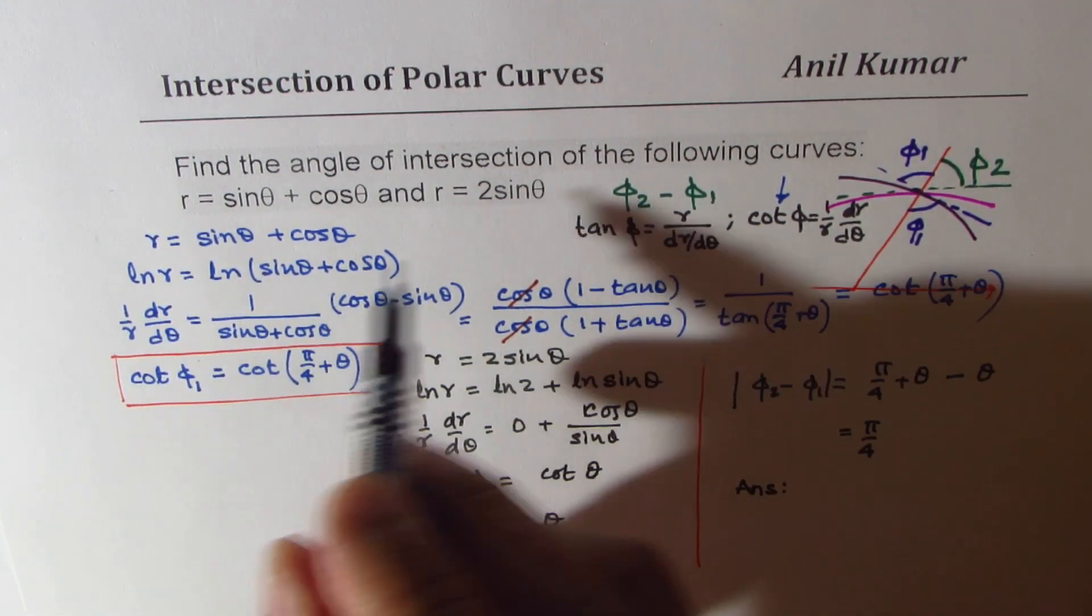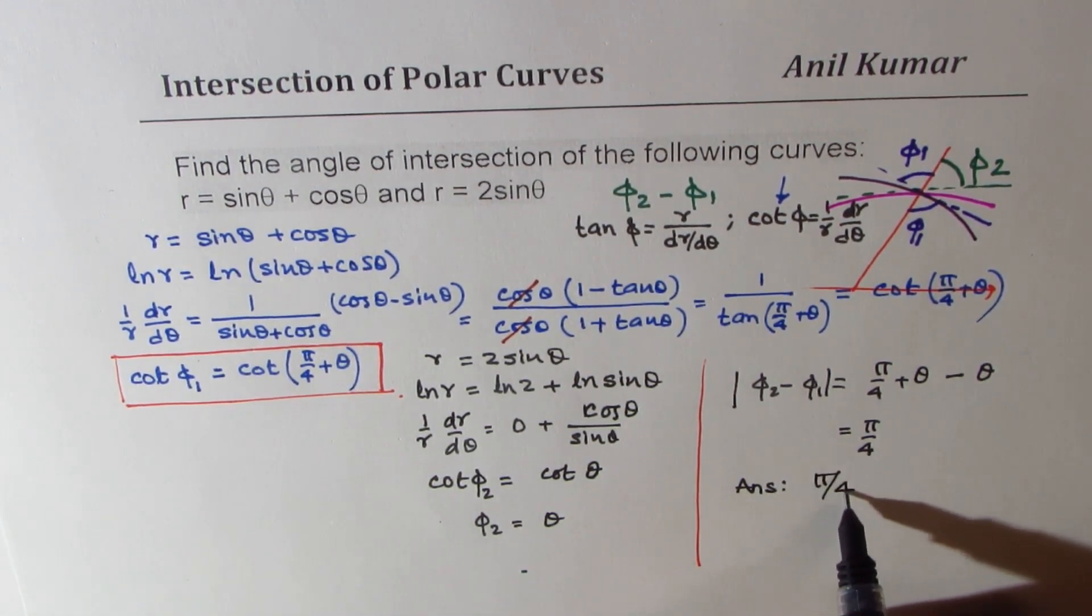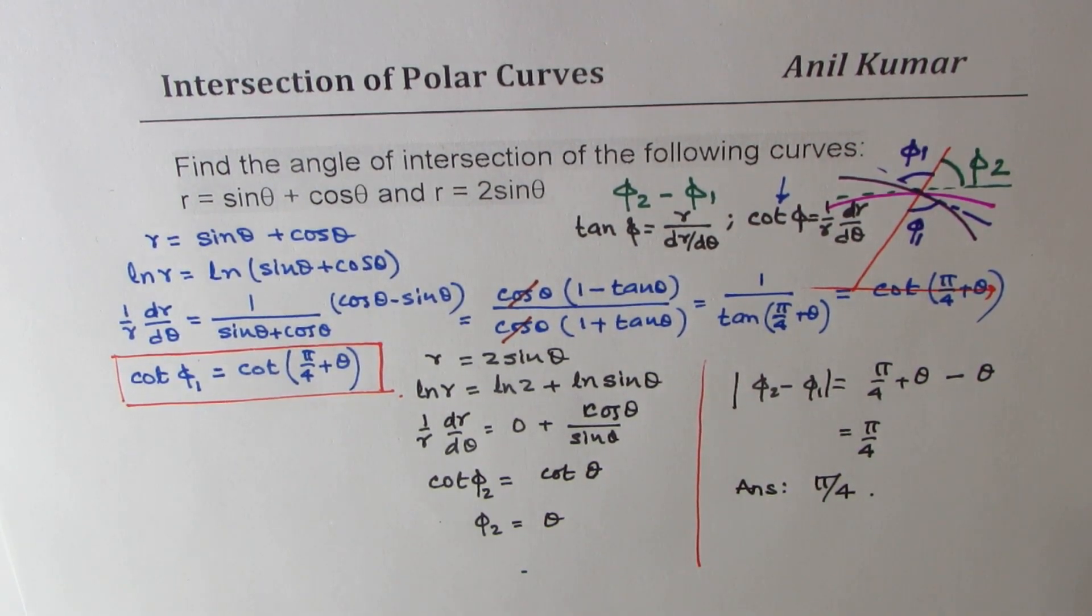So the answer is that the two polar curves intersect at an angle of pi by 4. Is that clear?